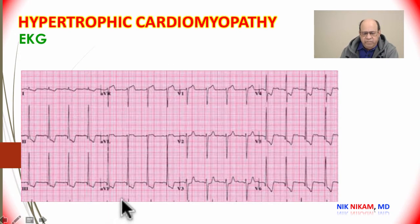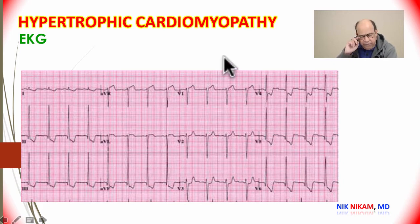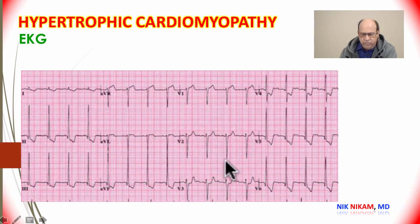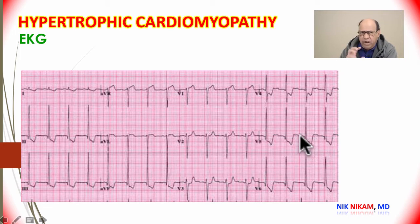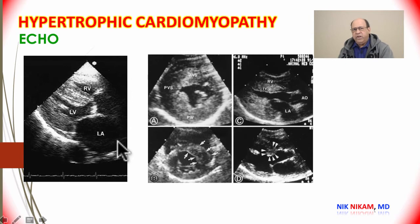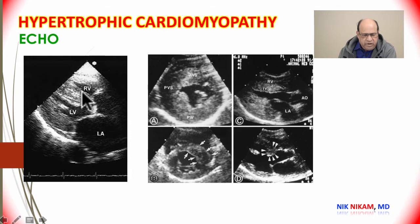The electrocardiogram can show evidence of left ventricular hypertrophy, with significantly increased voltage in the precordial leads associated with dramatic ST segment depression and T wave inversions. This is probably secondary to subendocardial ischemia because of increased thickness and increased diastolic pressure seen in patients with hypertrophic cardiomyopathy.